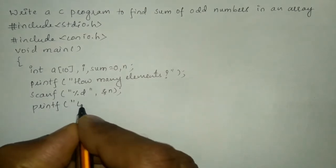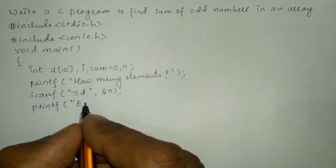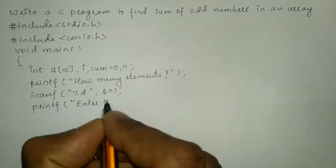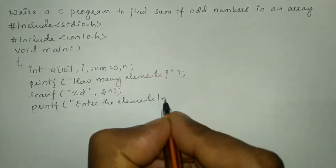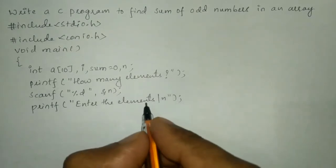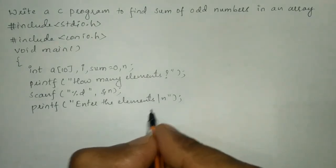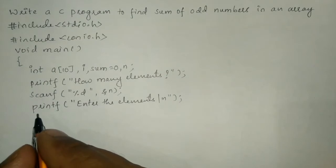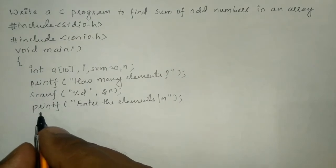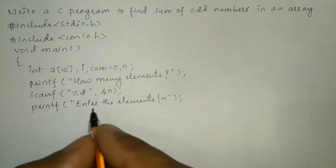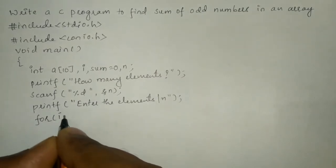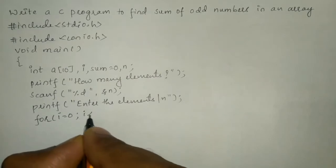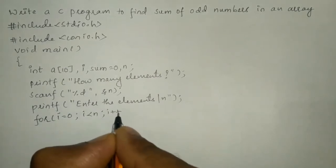Now we are going to enter elements one by one using a printf statement. Here I am going to display the message 'enter the elements' with a backslash n and semicolon. This backslash n brings the cursor down to the next line. To enter elements one by one we use a looping structure: for i equal to 0, i less than n, and i plus plus.